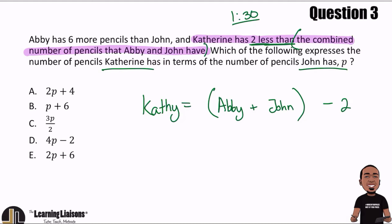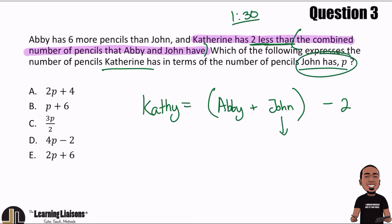Now our goal is to strictly write this in terms of John, because notice that Abby is not written anywhere yet. John is p, so I'll go ahead and write that as p, and then minus two. But the issue here is how are we going to write Abby in terms of John?